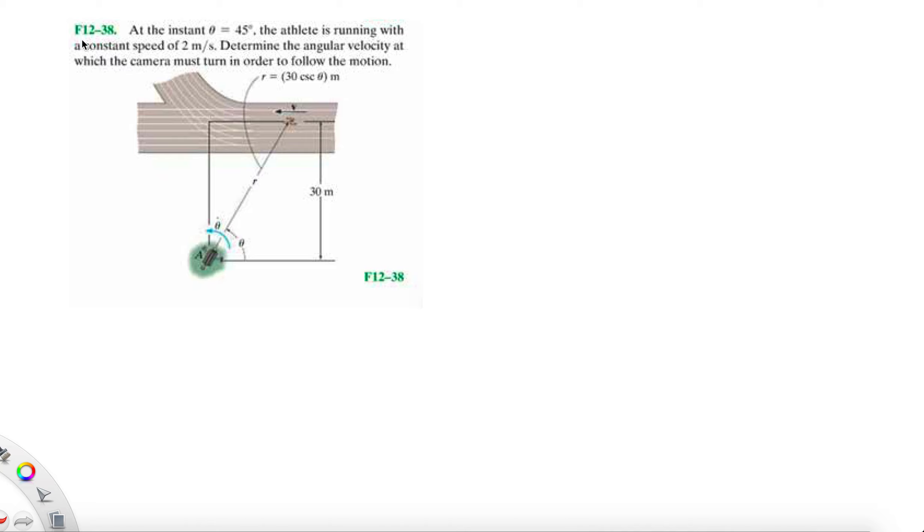We are doing the last problem in this section of chapter 12, problem 12-38. This is probably the better one of this chapter because it's kind of fun. So we have an athlete running with a constant speed of two meters per second.